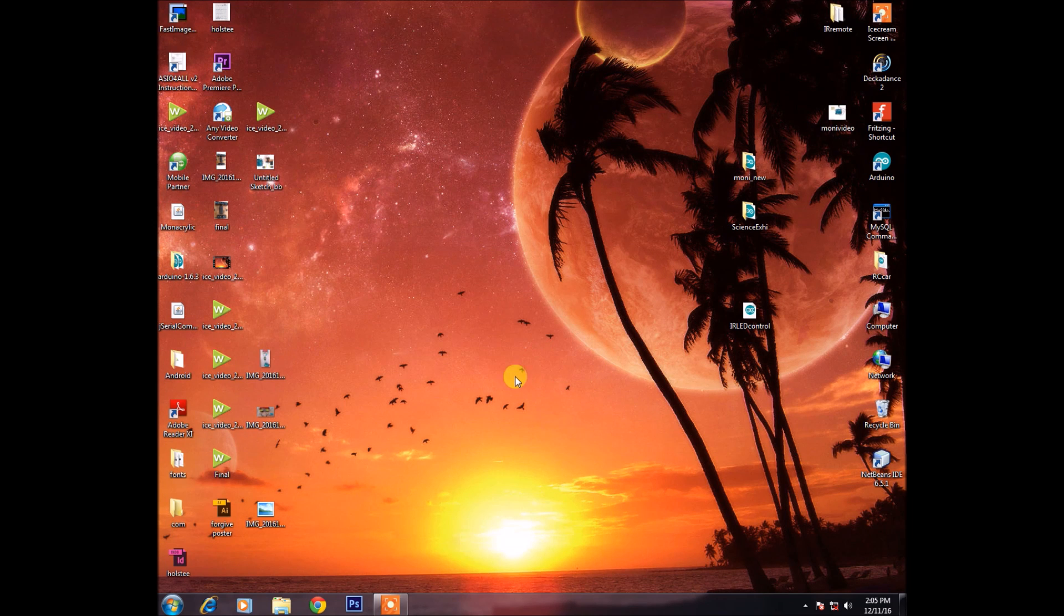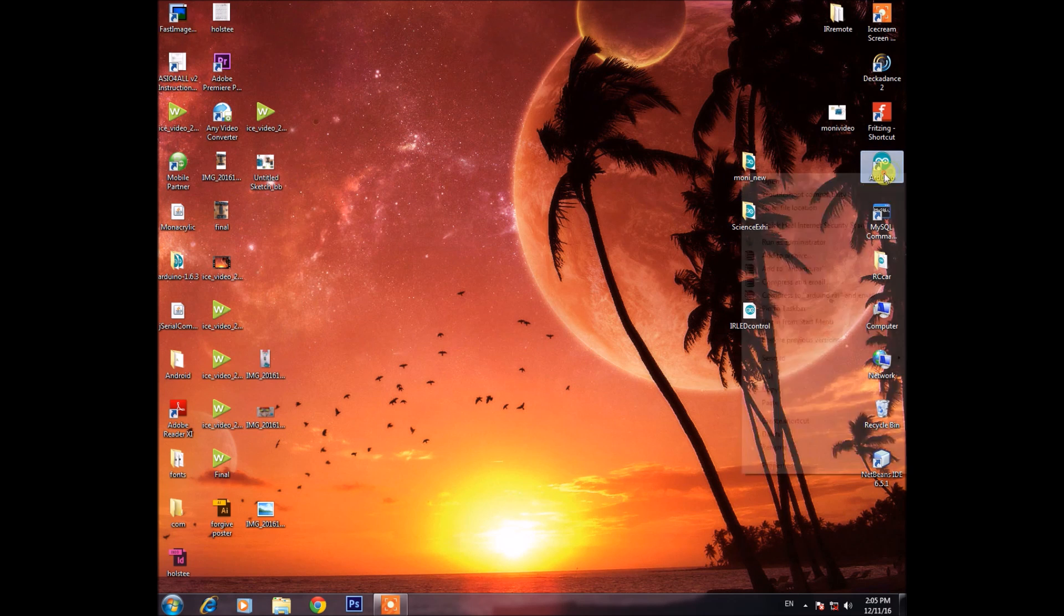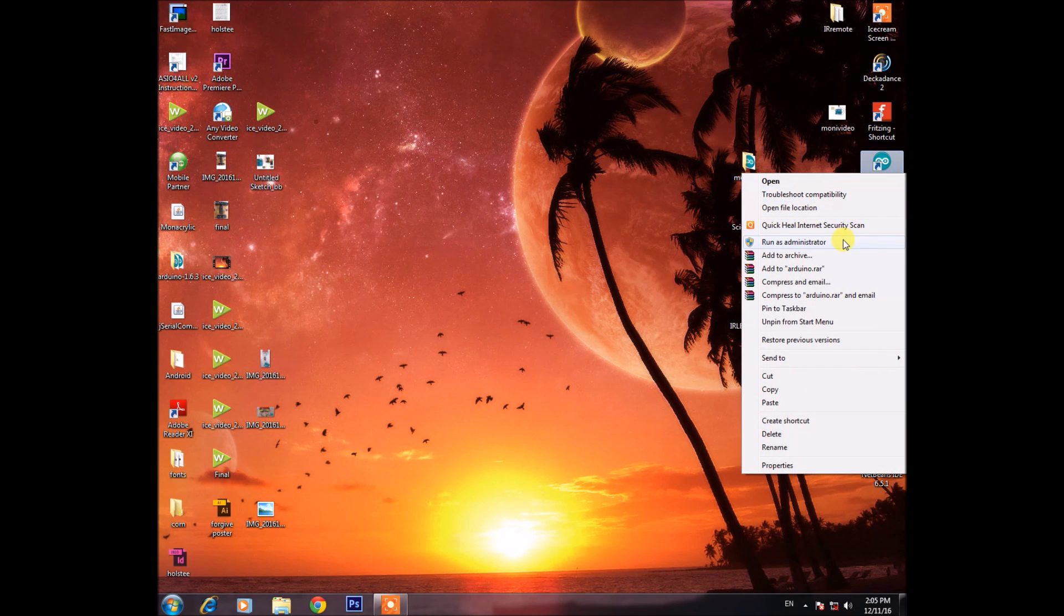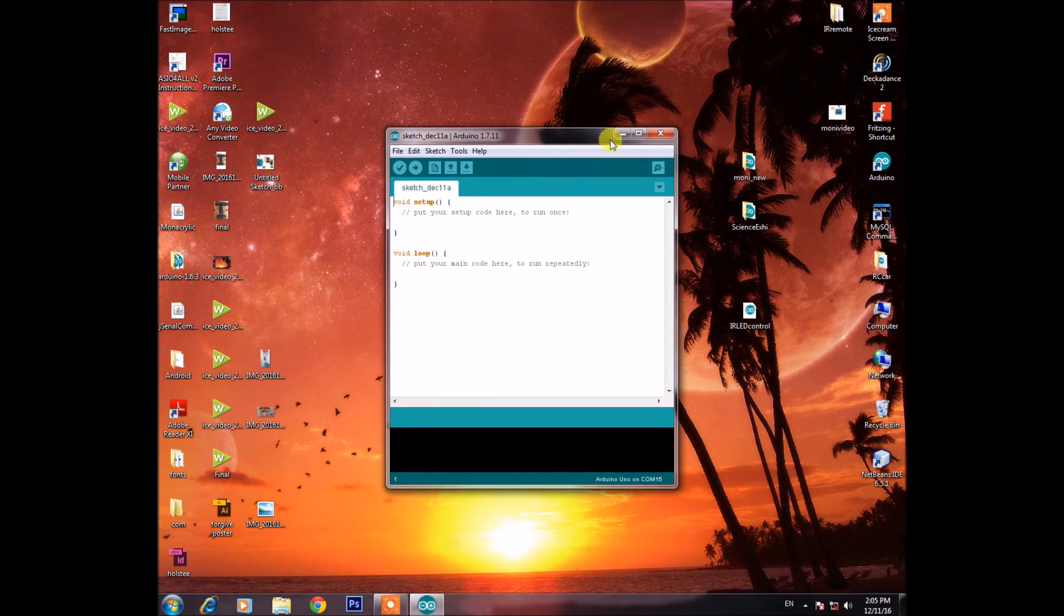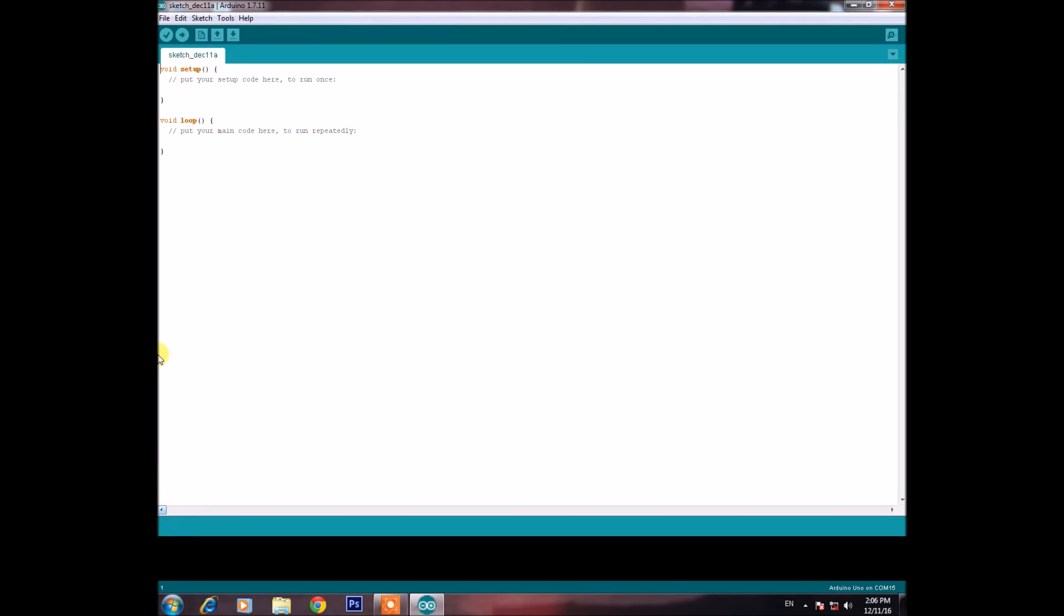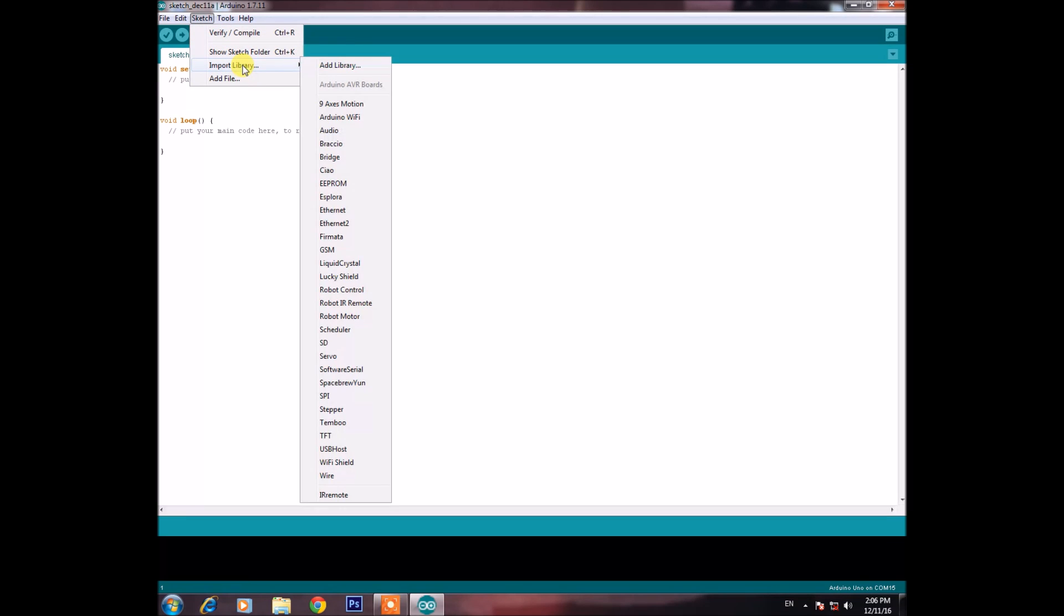Okay, so now let's get into the programming of it. The interesting part, how to control the Arduino. And you'll have to go to the Arduino software here. Let's open it. There we are. And you'll find a link in the description that will lead you to the download link for the IR remote library. You'll have to import it. And of course you'll get it in a zip file which you'd have to unzip.